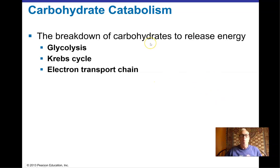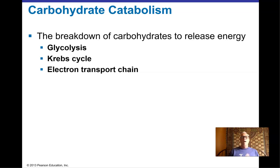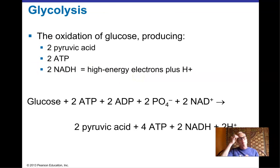Carbohydrate catabolism begins with glycolysis — a series of 10 chemical reactions. You do not need to know the individual steps shown in the book; just know what goes in and what comes out. Glucose molecules are oxidized through these 10 reactions, producing specific products that enter the Krebs cycle. Electrons gathered from glycolysis and the Krebs cycle are then passed down the electron transport chain to make ATP.